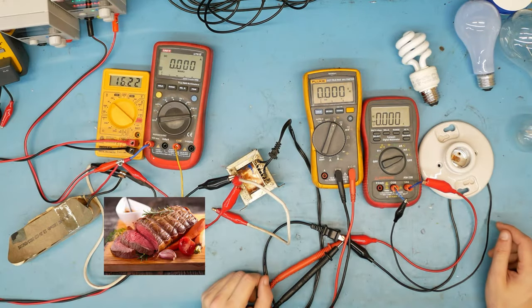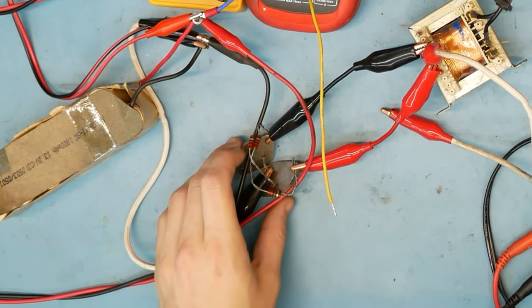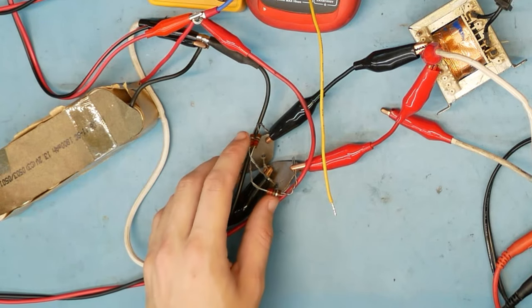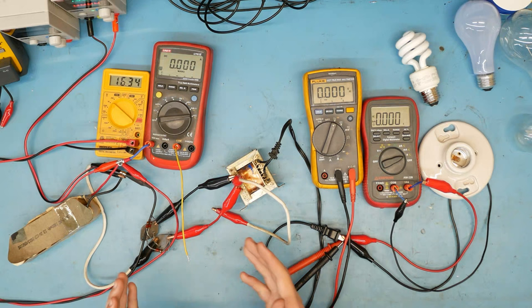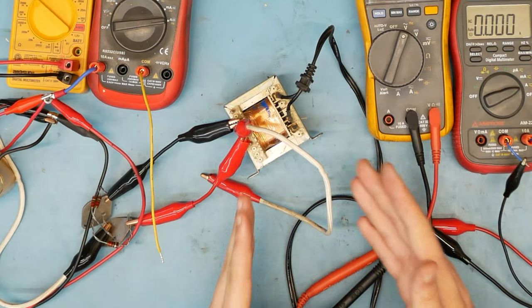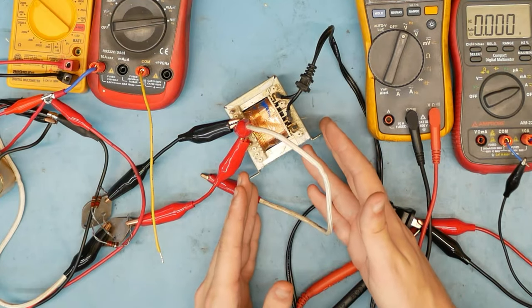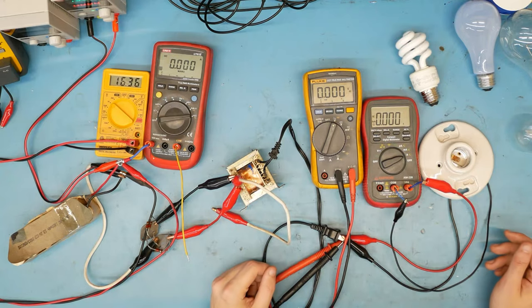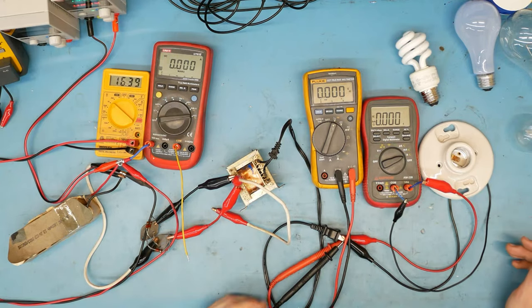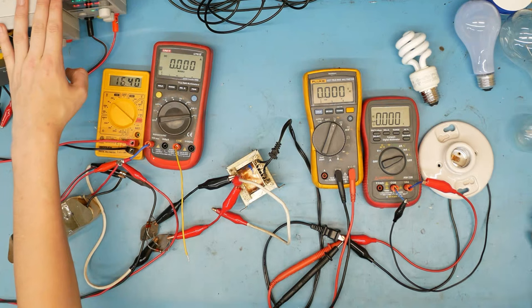So I went ahead and beefed up the circuit and doubled the base current to these transistors by halving the base resistance. My theory is that's going to drive them harder into saturation. That means we're going to be able to push and pull more current through this transformer, and we should be able to achieve higher power at the output. Previously, we were running into the limit of this power supply. It can only supply about five amps.